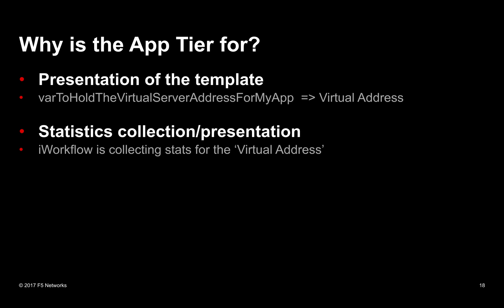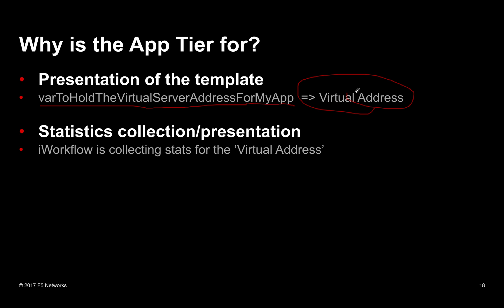The second important thing is the statistics collection and presentation engine built into iWorkflow. It doesn't know your bizarrely long custom iApp attribute name — it knows to query whatever the 'virtual address' is. So if we do this mapping, the stats engine just says 'give me whatever the virtual address is mapped to for this template,' and it can bridge that gap and work out: for stats on the VIP, what it actually needs to query is your custom attribute name. Both of those things are important.